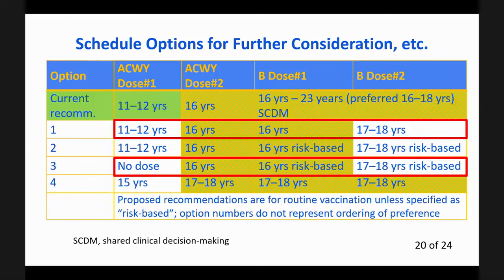Dr. Cotton: I would favor option one. It's hard to tell whether the low numbers at 11 to 12 years of age are due to the vaccination program already in place. I do favor moving the second dose of MenB closer to when adolescents are going to be in college and at highest risk, given it only lasts about one to two years. I think risk-based is hard and also creates equity issues — asking who's planning on going to college can change, and the high-risk behavior is also very prevalent in that age group. So I would favor option one.